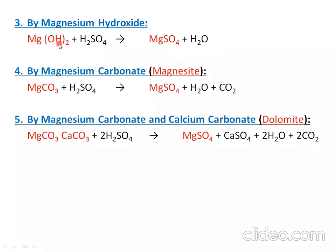Magnesium hydroxide can also be used to make magnesium sulfate. Similarly, magnesium carbonate reacts with sulfuric acid — the carbonate reacts with the acid, releasing CO2 gas and forming magnesium sulfate and water.